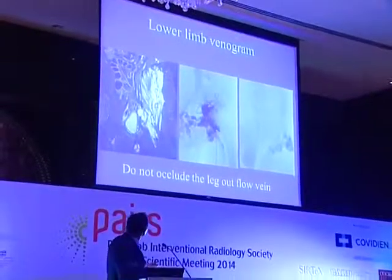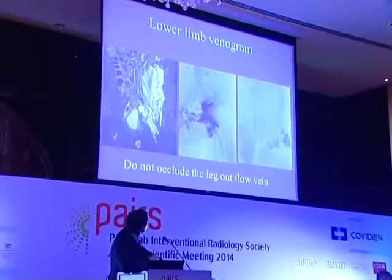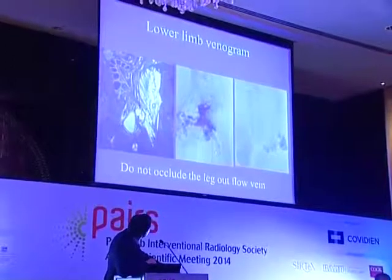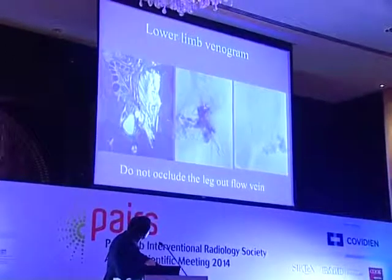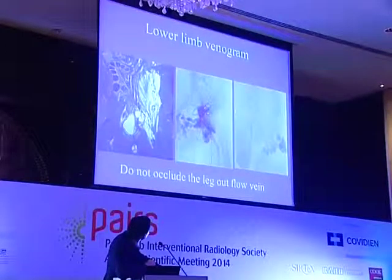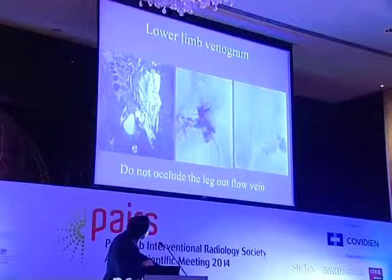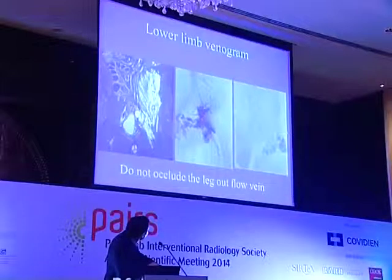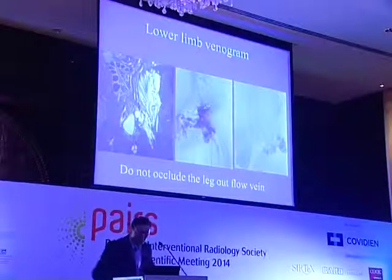The same concept applies to the iliac region with extensive venous malformation. Venogram shows absent iliac vein, with flow out of the malformation from left to right. Work away from important veins to ensure you are not occluding them.